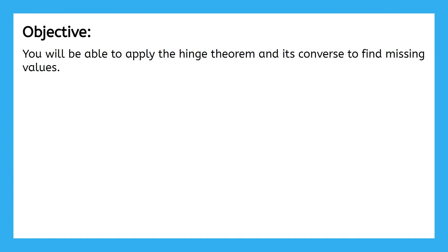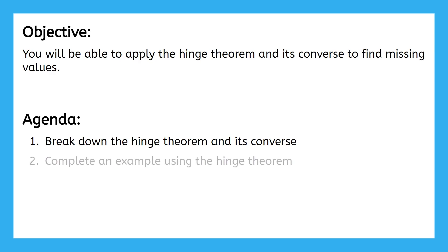By the end of this lesson, you will be able to apply the Hinge Theorem and its converse to find missing values. First, we'll break down the Hinge Theorem and its converse to be able to describe what they tell us about two triangles. Next, we'll complete one example using the Hinge Theorem. Finally, we'll complete one example using the Hinge Theorem converse.